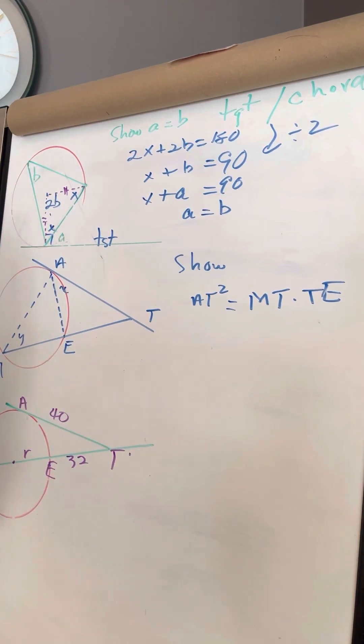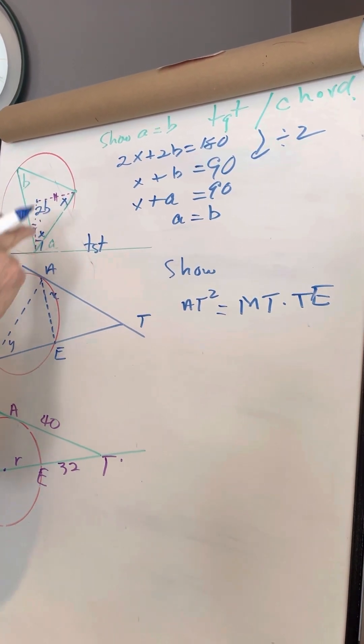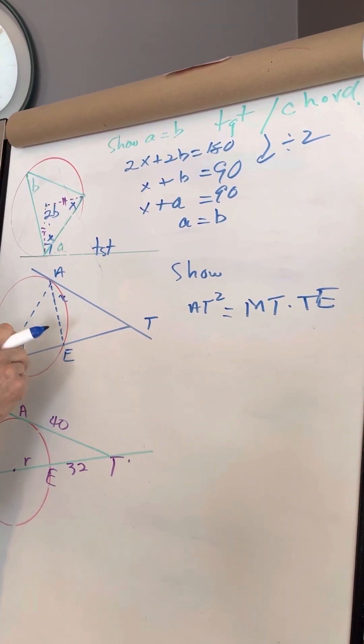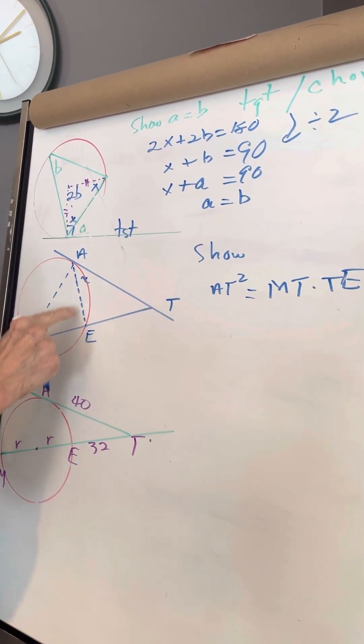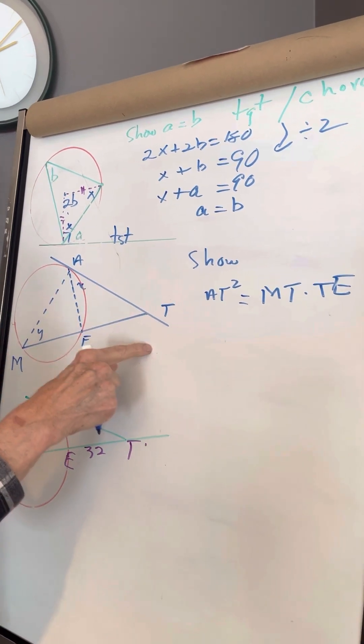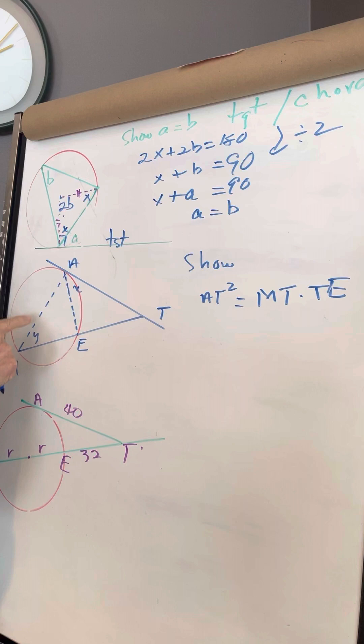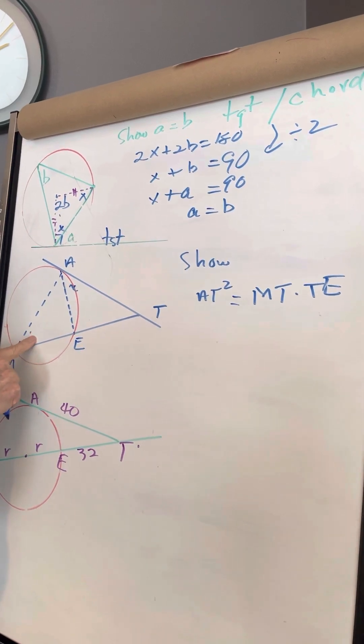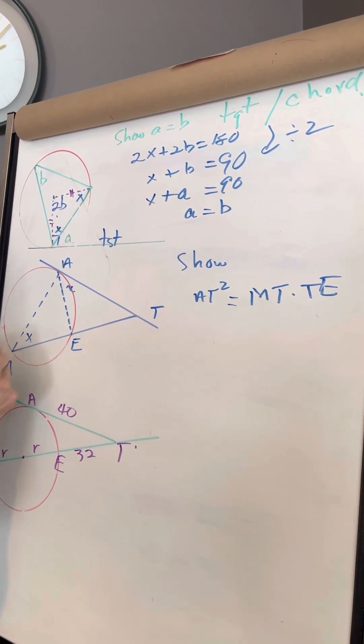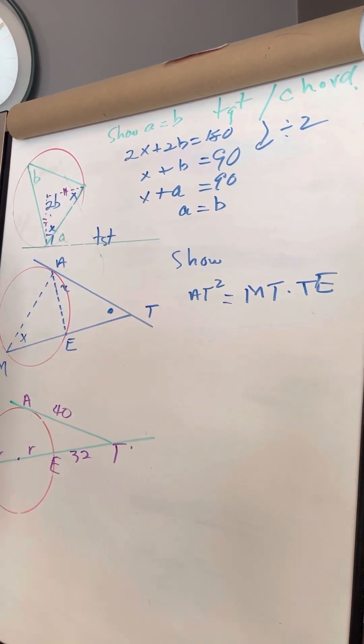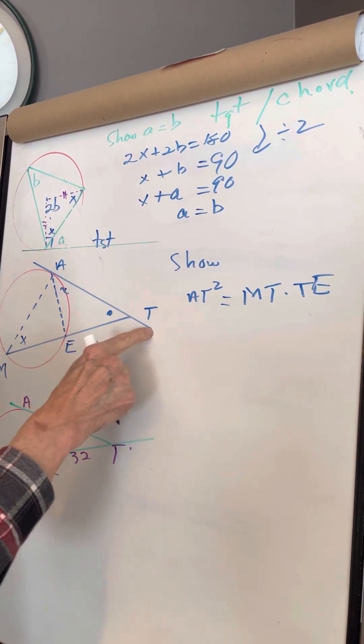I need that idea to go to here. So this is the chord, this is the tangent. The angle between the tangent and the chord is equal to the inscribed angle over here, so it's also called x. This is the common angle. Our job is to show that AT² equals MT times TE.